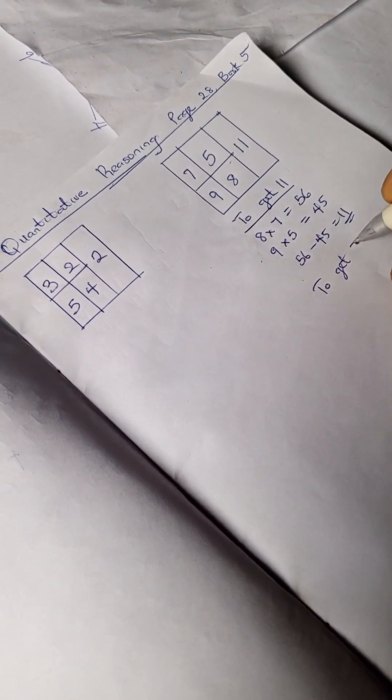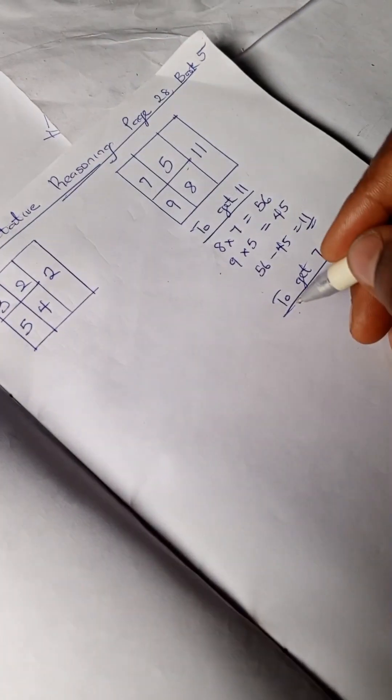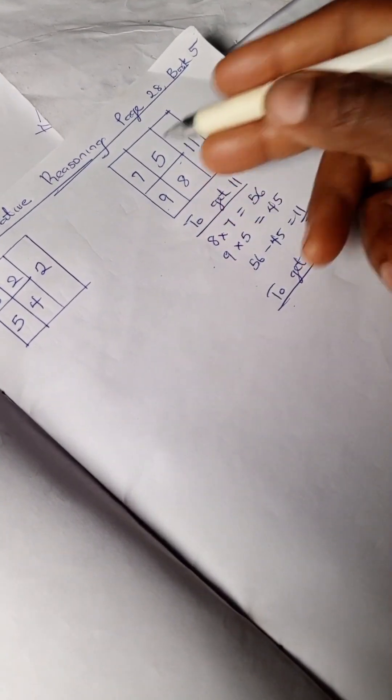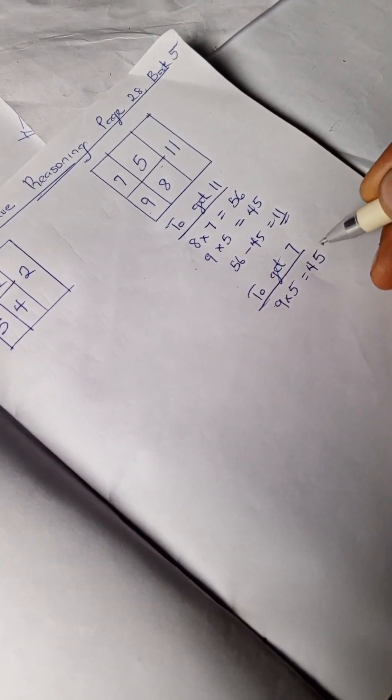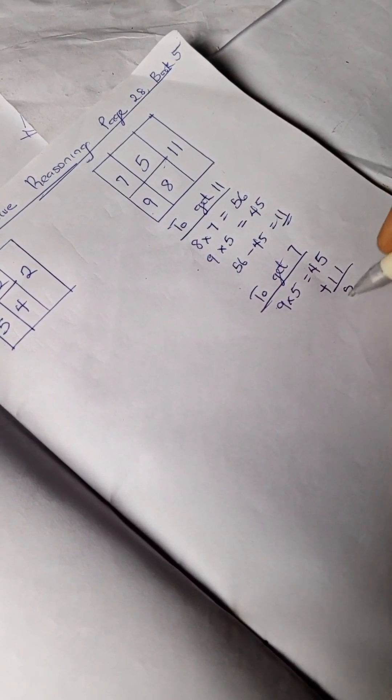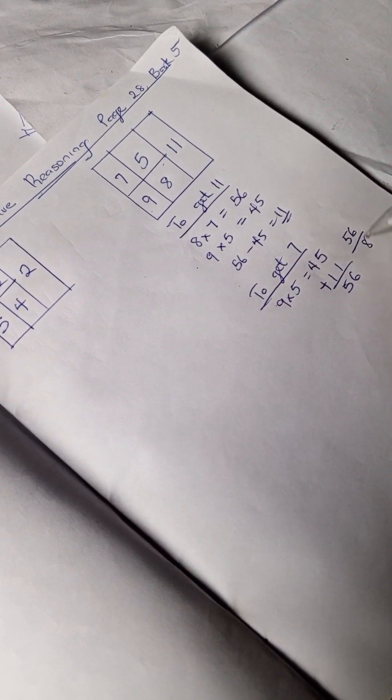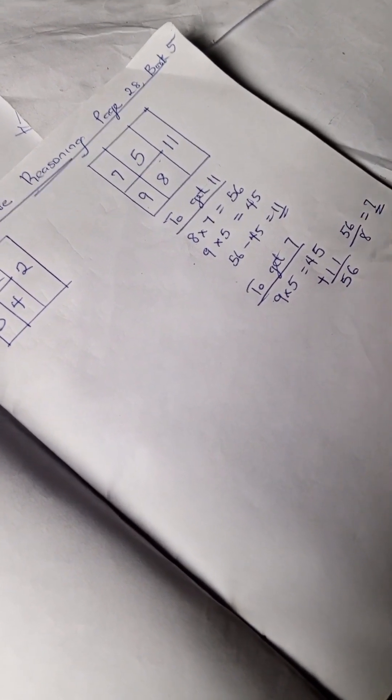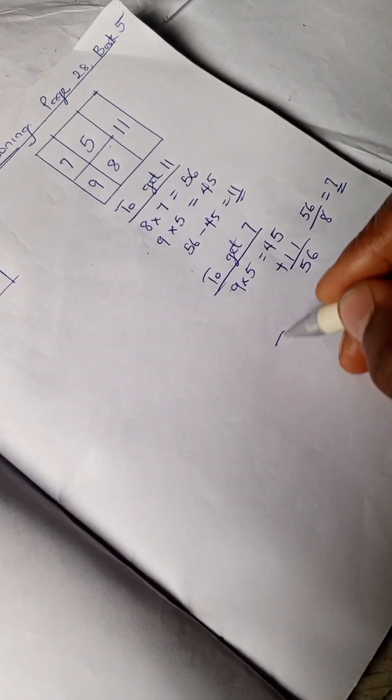So to get 7, we're going to multiply this side: 9 times 5 is 45, so 45 plus 11 is 56. So 56 divided by 8, which is the pattern, ought to be 7. These are 7.